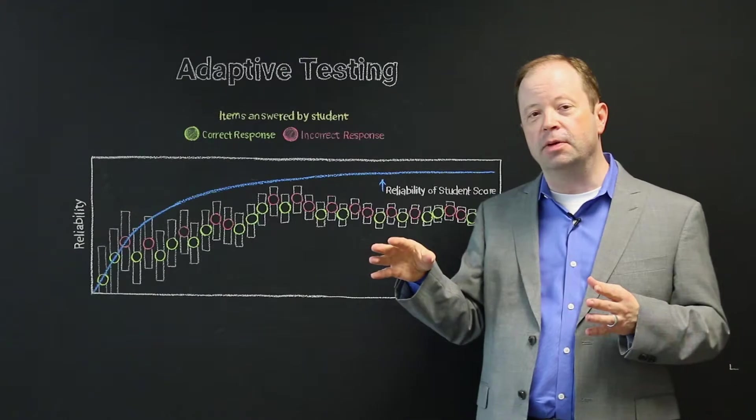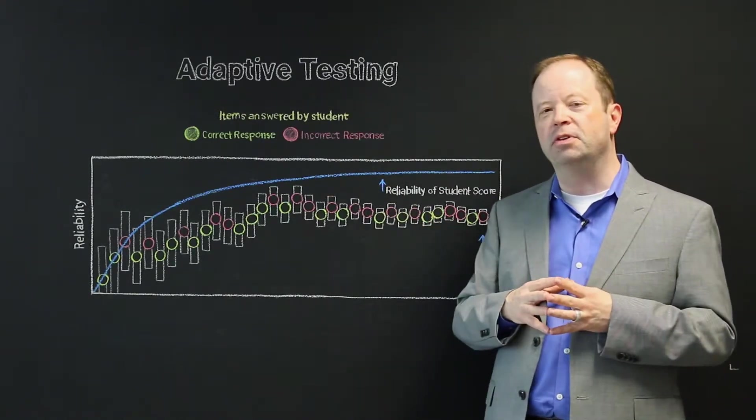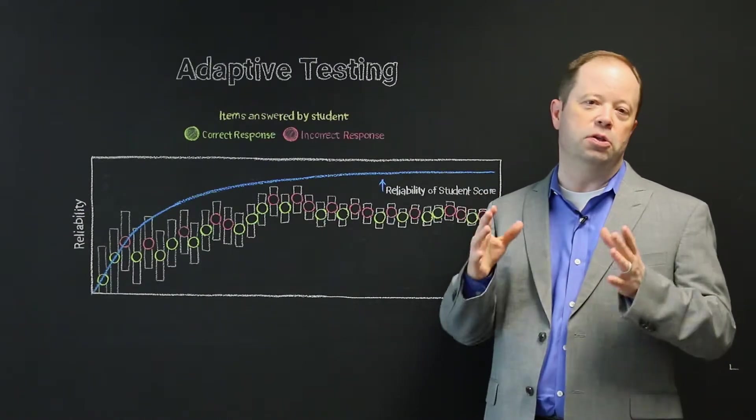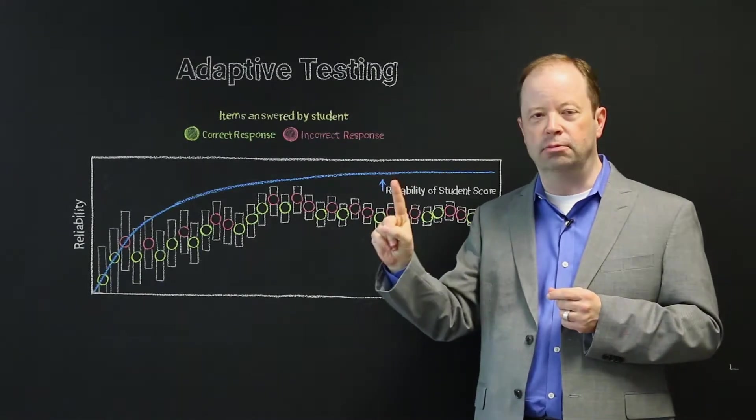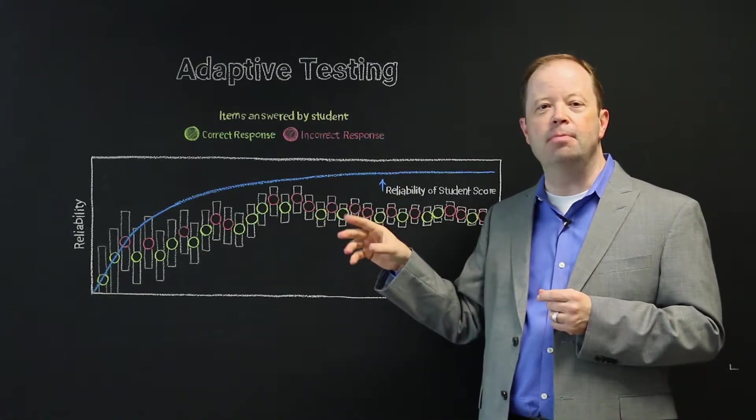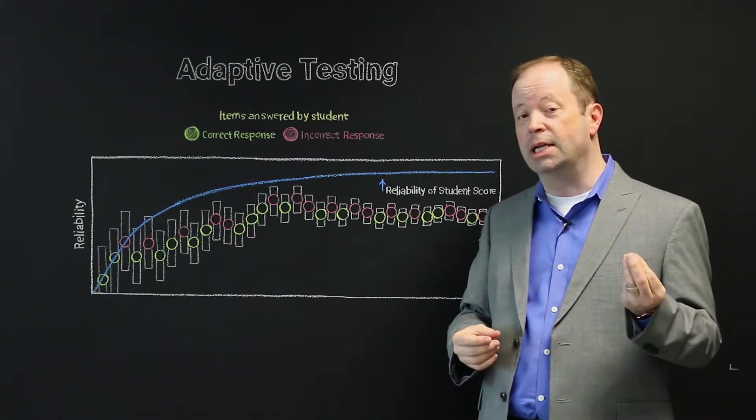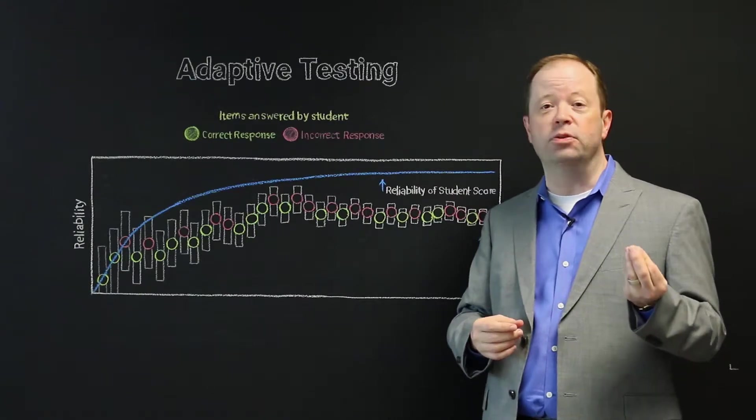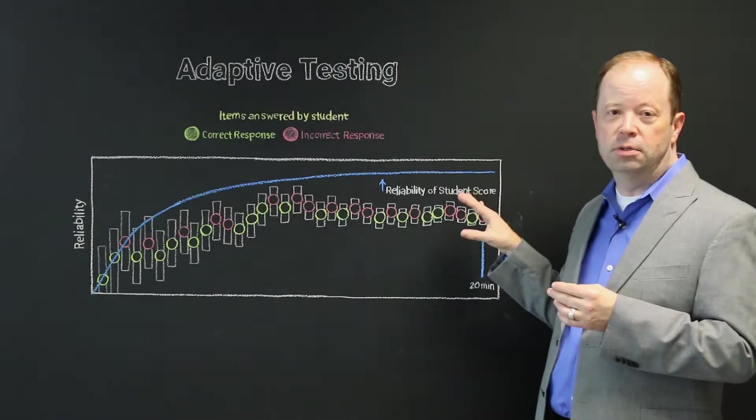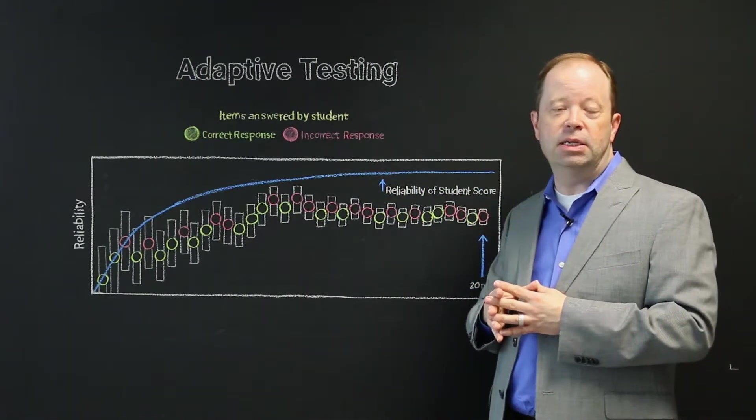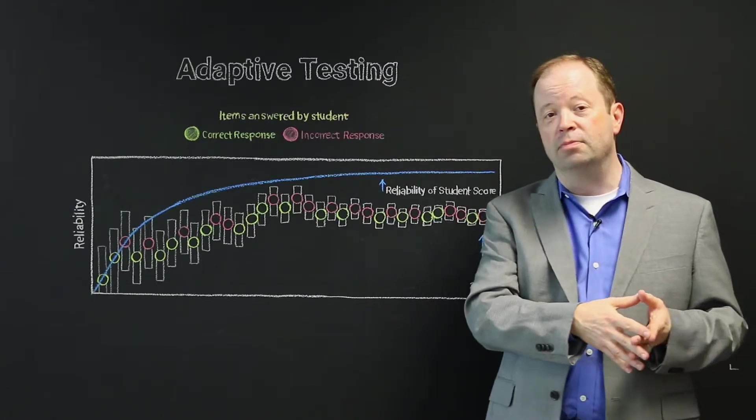A couple other things about adaptive testing that could be useful. First of all, if you ask a psychometrician about adaptive tests, generally speaking, even the most conservative psychometricians will say every one question on an adaptive test has the same information producing power of at least two questions on a non-adaptive test. And some will say maybe the power of up to three.